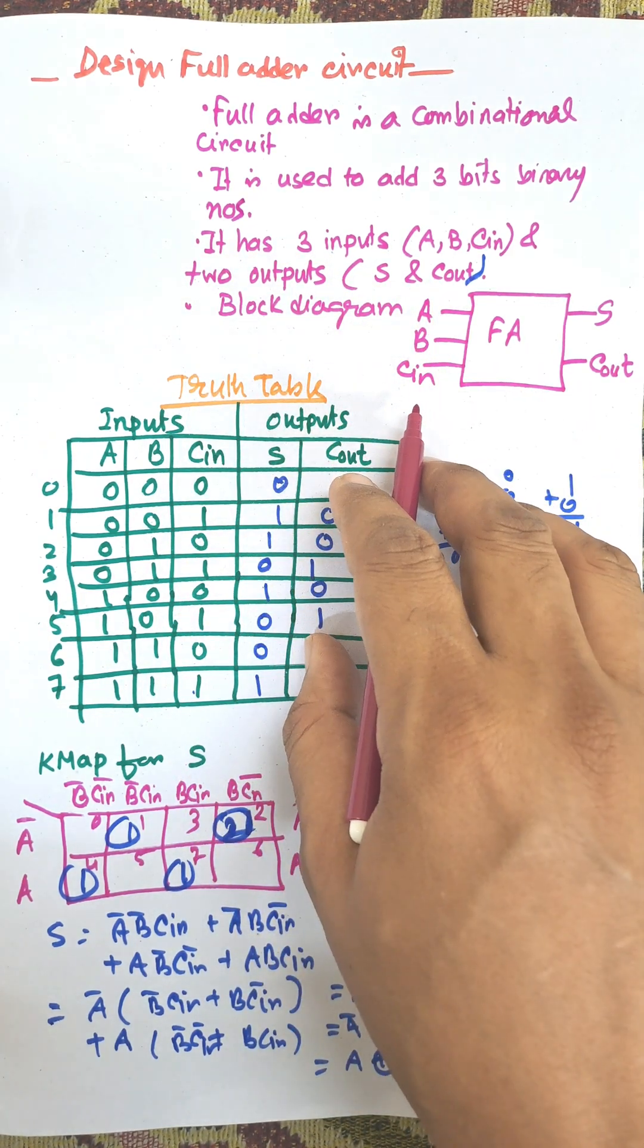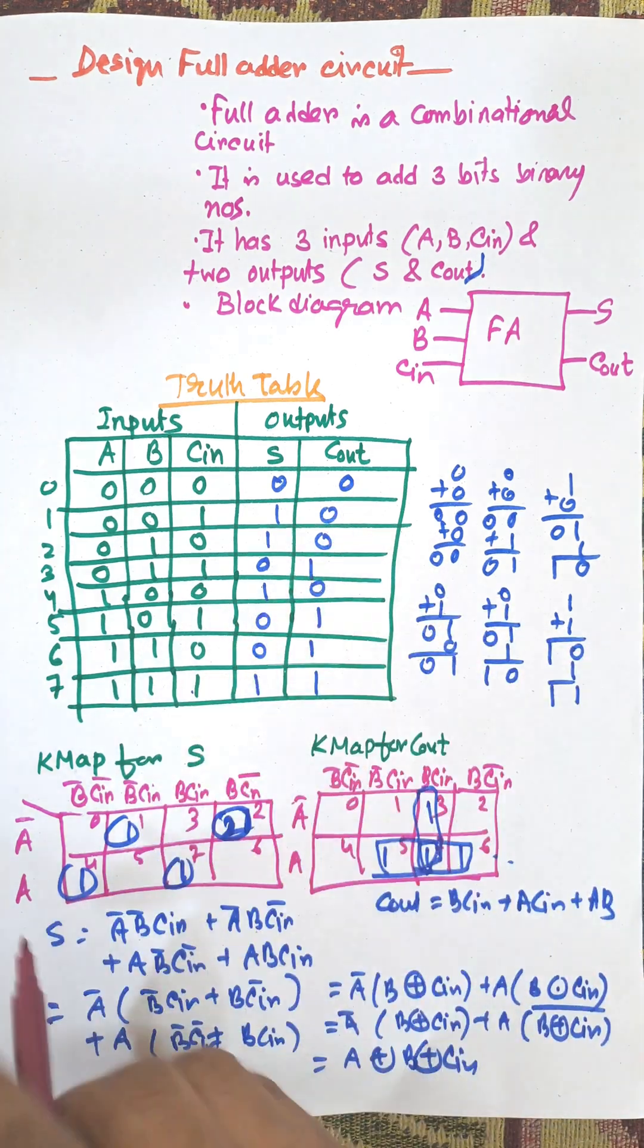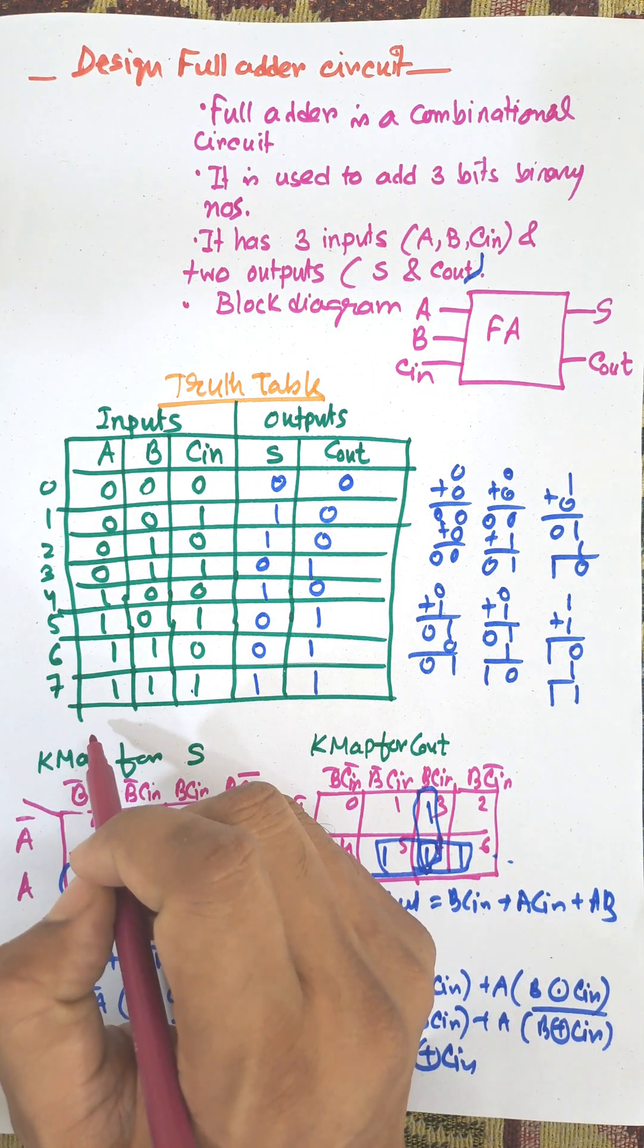Block diagram: A, B, C in are the inputs and S and C out are the outputs. Now the truth table. There are 3 inputs, so there will be 8 combinations of input variables.